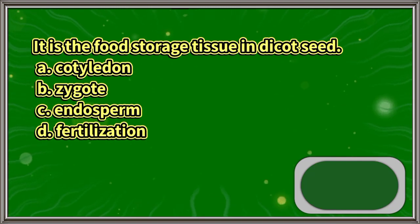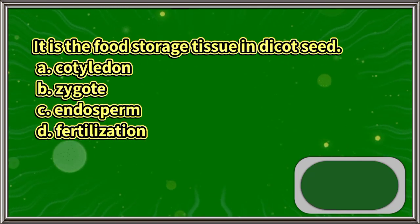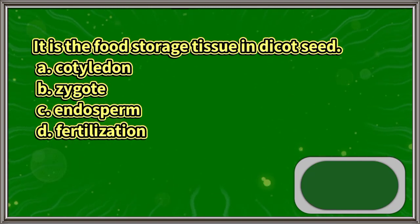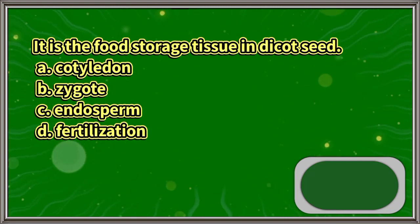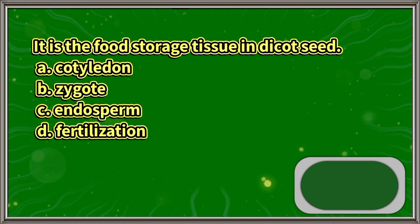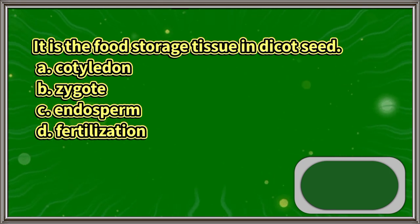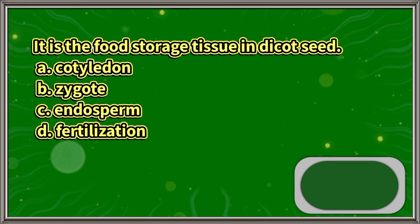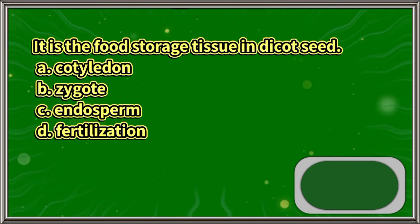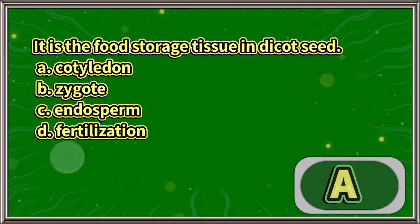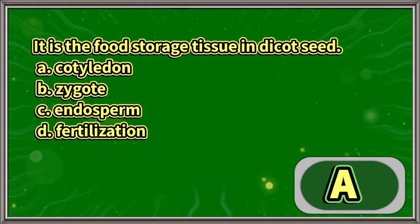It is the food storage tissue in dicot seed. A. Cotyledon. B. Zygote. C. Endosperm. D. Fertilization. The answer is letter A.